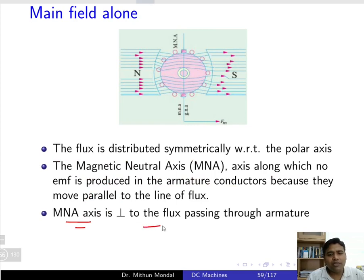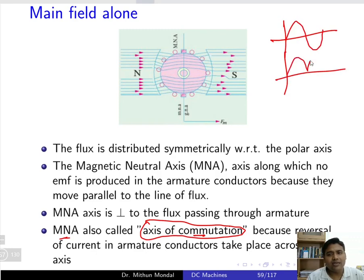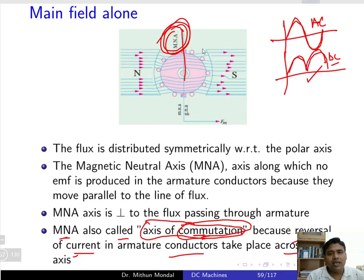The MNA axis is perpendicular to the flux passing through the armature, and it is also called the axis of commutation. The function of the commutator is to convert AC supply into unidirectional (DC) supply. The MNA is called the axis of commutation because the reversal of current in the armature conductor takes place across this axis — that is, the alternating current becomes unidirectional current along the MNA axis.